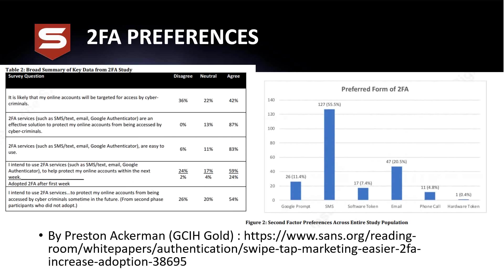I've always wondered why more companies don't implement 2FA — it's not tremendously hard. The main barrier is users hate it. Research from Ackerman's gold paper shows that when it comes to preferred form of 2FA delivery, most users actually prefer SMS, and second highest is email.